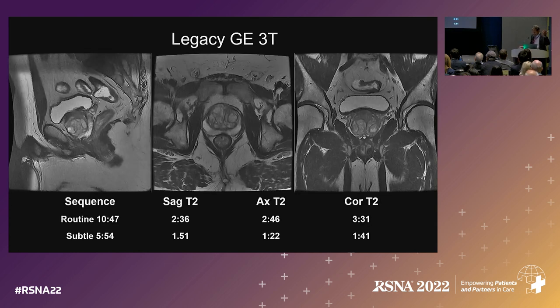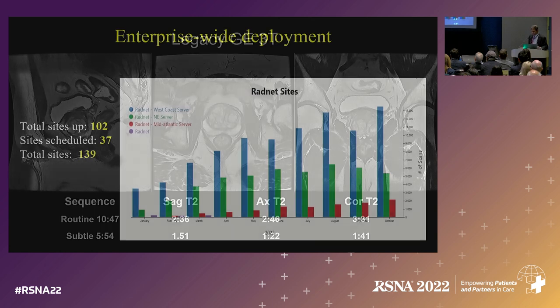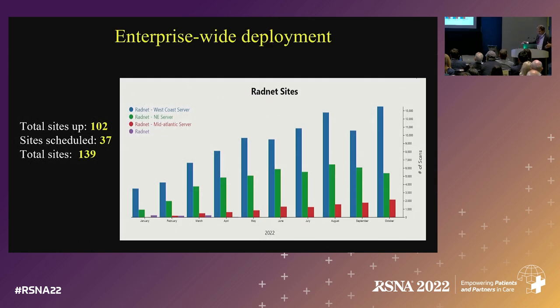Just one more example to show you that it's vendor-agnostic. We identified 139 high-priority sites in our network from multiple different vendors.